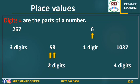What about 58? Two digits. There are two parts or two digits in this number. In number 267, there are three parts or three digits. And 1037 — how many digits are in this number? Only four.